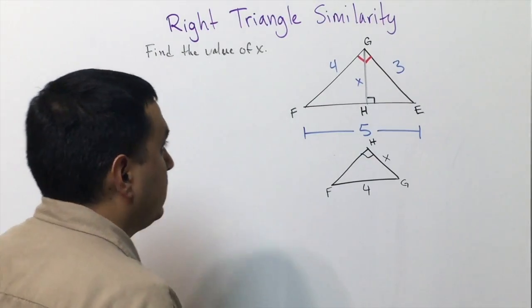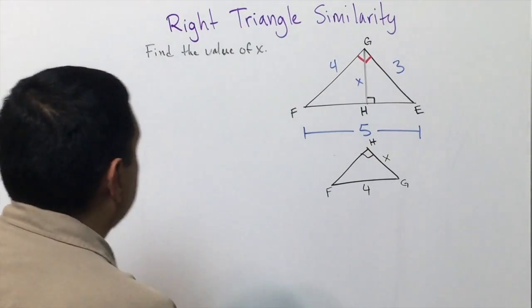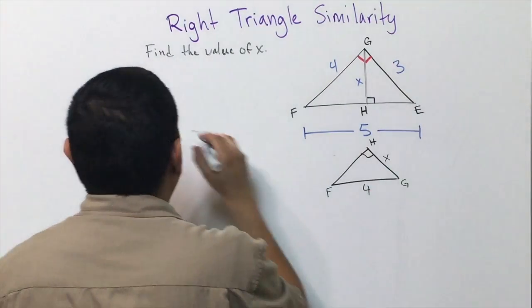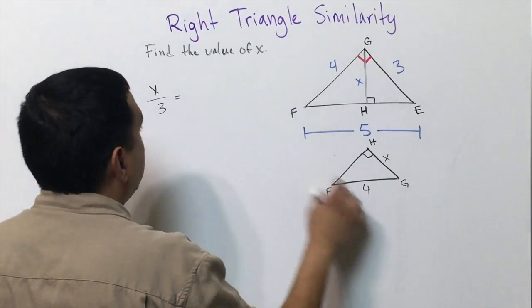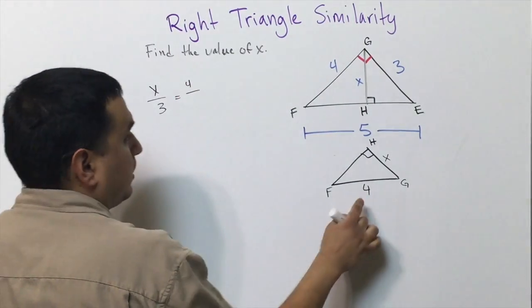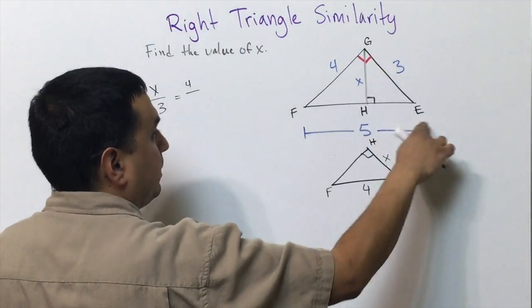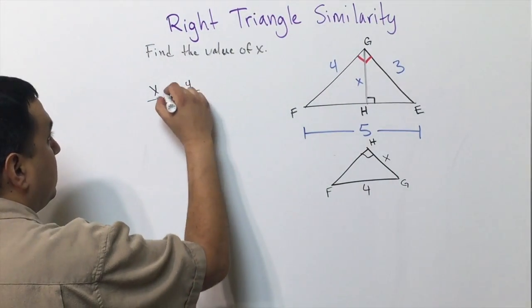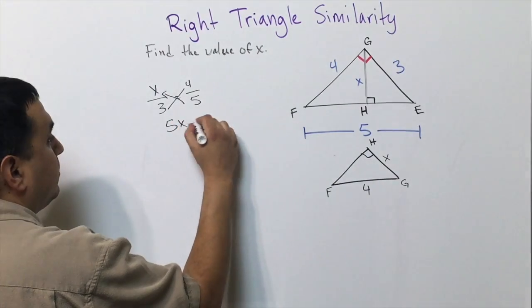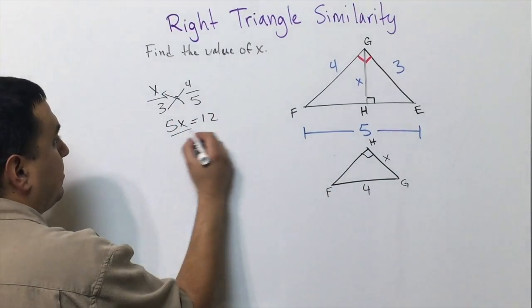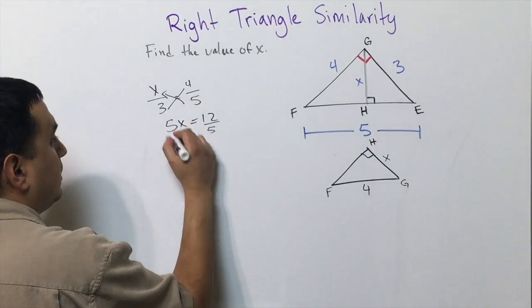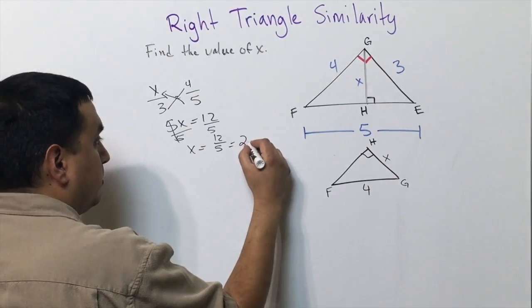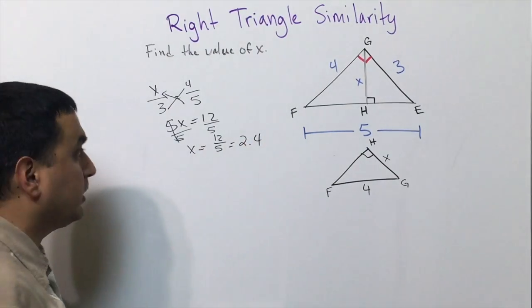Solving my proportions, I would say x is to 3 as this hypotenuse of 4 would go to this hypotenuse of the main triangle which is 5. Cross multiplying, 5x equals 12. If I divide by 5, that tells me x is 12 over 5, which reduces to 2.4 if you turn that into a decimal.